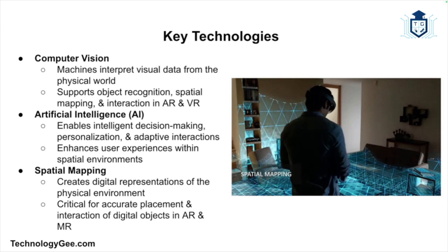There's also computer vision — this technology enables machines to interpret and understand visual information from the physical world. It is essential for object recognition, spatial mapping, and interaction in AR and MR applications. We also have artificial intelligence — AI algorithms enhance spatial computing by enabling intelligent decision-making, personalization, and adaptive interactions within the environment.